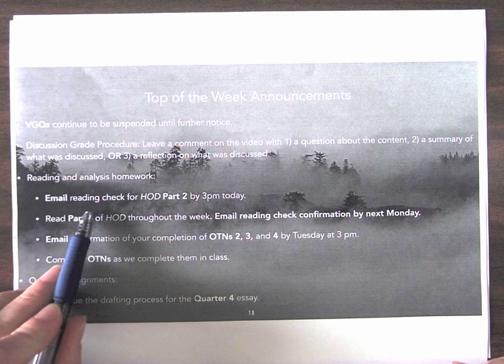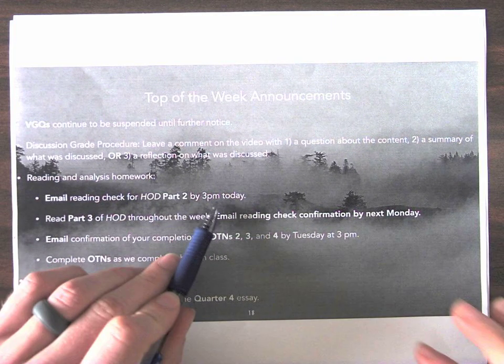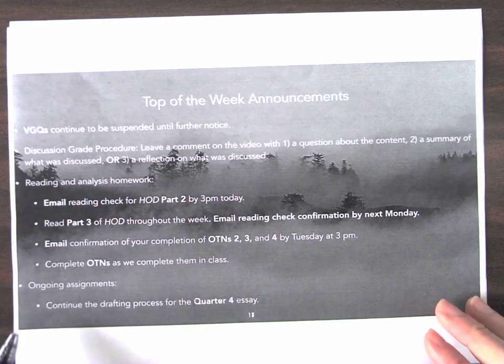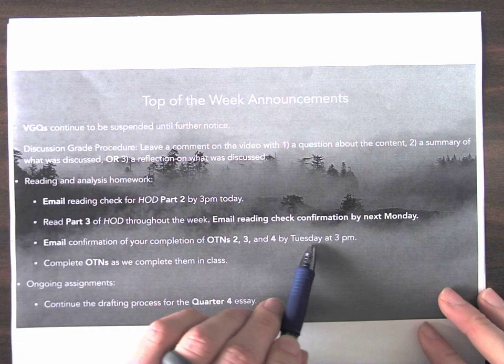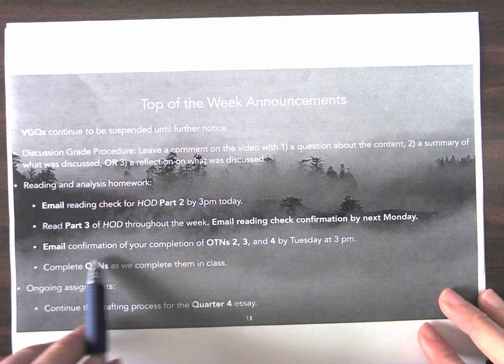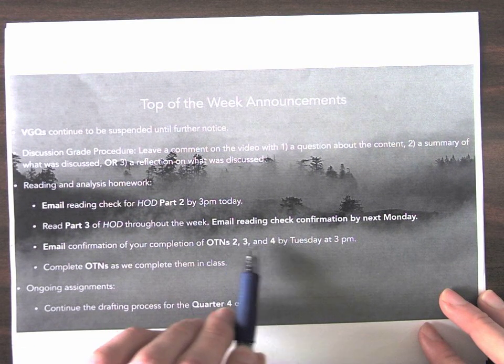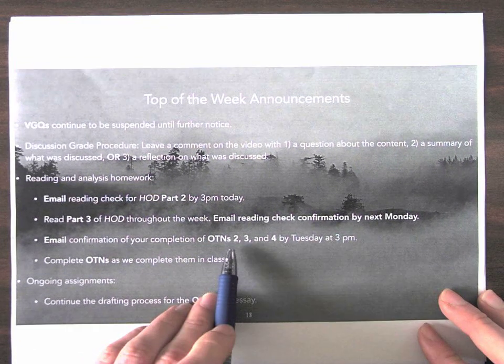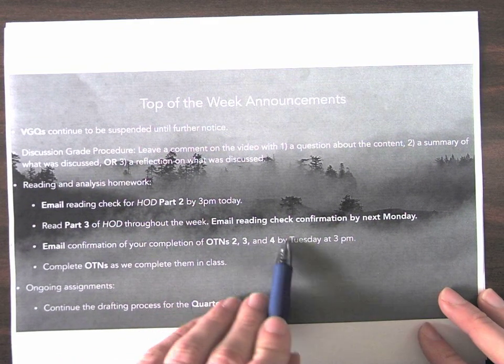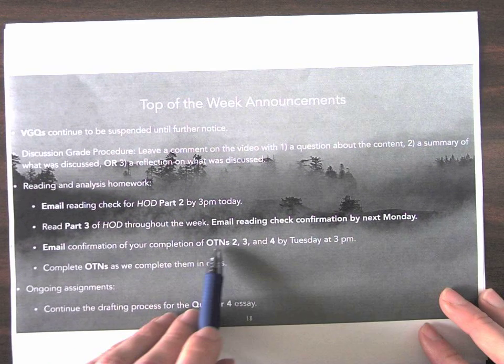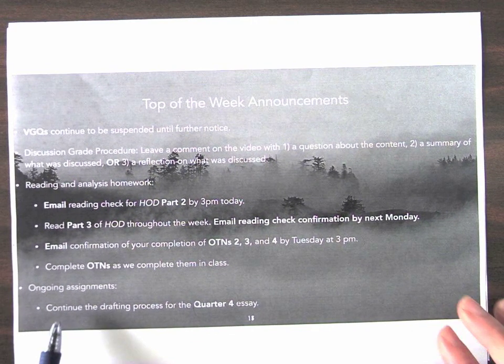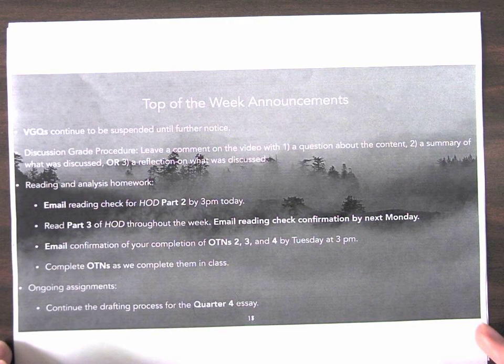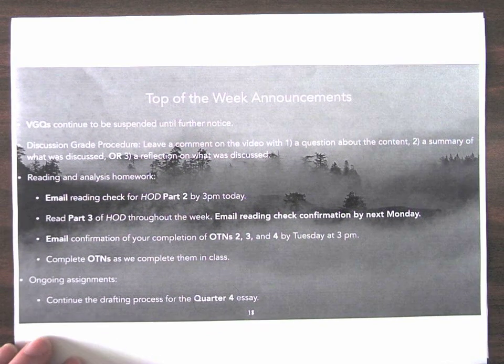Aside from that, you need to make sure that you email me your reading check for Heart of Darkness Part 2 by 3 p.m. today. Throughout the course of this week, you are going to read Part 3 of Heart of Darkness. By Tuesday, which is tomorrow at 3 p.m., I need email confirmation of your completions of OTNs 2, 3, and 4. That will be for a tri-weighted homework grade. So three homework grades in one, all evaluating whether or not you have completed these assignments. If you have not completed all three of them, then do not tell me that you have. Make sure that you tell me an accurate representation of the extent to which you have completed those assignments.